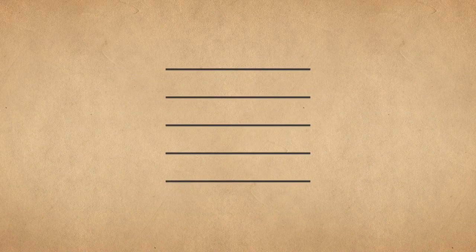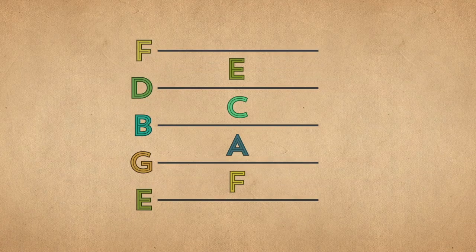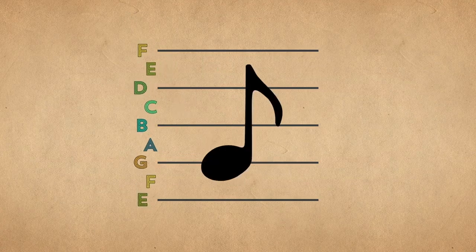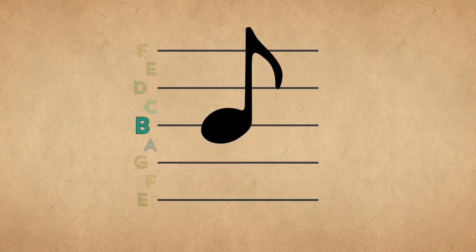Going back to the staff, every line and every space between two lines represents a separate pitch. If we put a note in one of these lines or in one of these spaces, we're telling a performer to play that pitch. The higher up on the staff a note is placed, the higher the pitch.